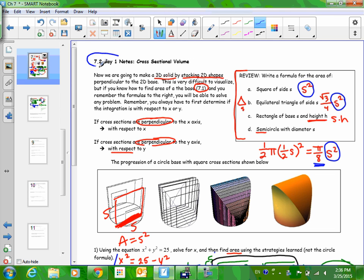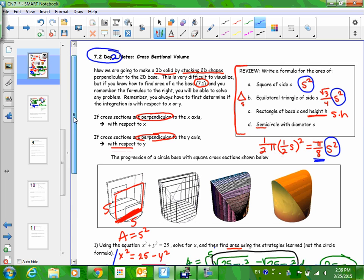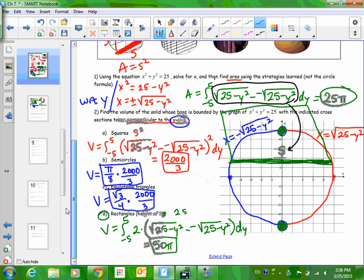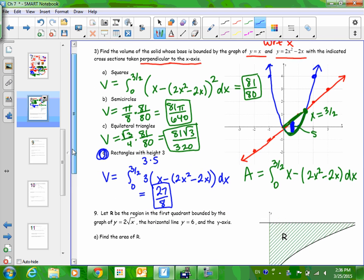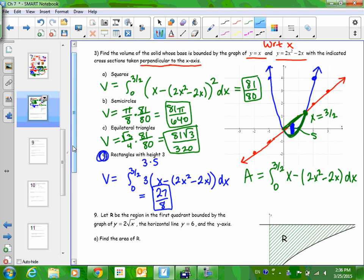Today, we're going to be doing 7.2, but we're going to do day two. Remember, we've already looked at these cross-sections. We looked at the computer simulation, and then we did a second example.